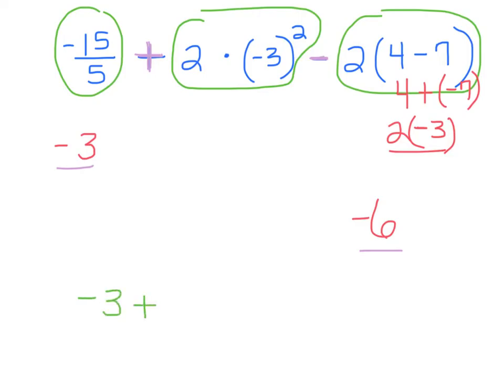Negative 3 plus, I'm going to leave a blank here for the middle part, and then it says minus I got negative 6. Again, all I did was copy my same symbols here. Now let's come here. I need to do my exponents first. Negative 3 squared means negative 3 times negative 3. Well, a negative times a negative is a positive 9. I took care of that. Now I just multiply it by 2, which is 18. So I'm going to fill in an 18 down here.